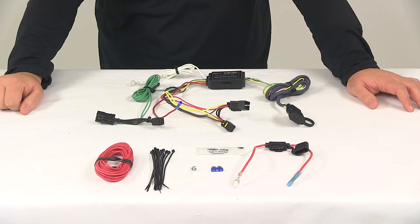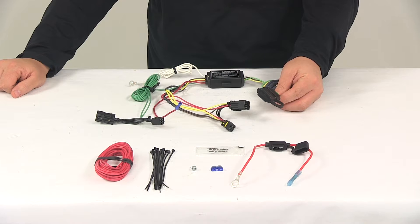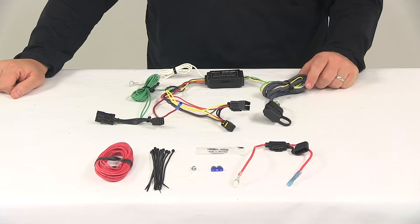And then your four-way connector is going to be stowed beneath the vehicle near the trailer hitch. We do recommend using a mounting bracket to keep the connector secure and easily accessible. Mounting brackets are sold separately.